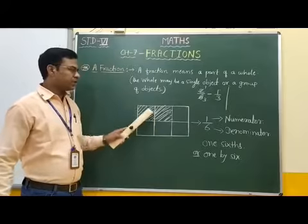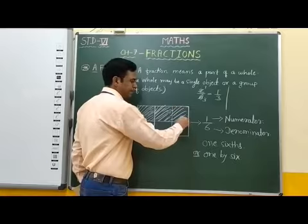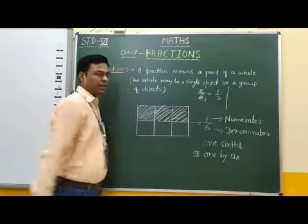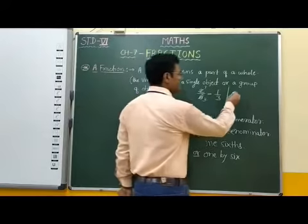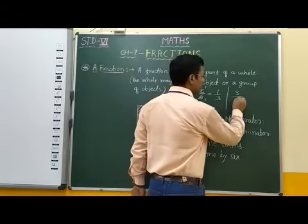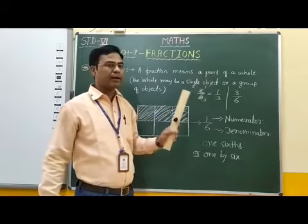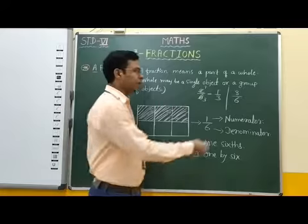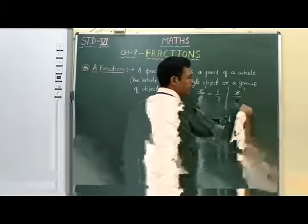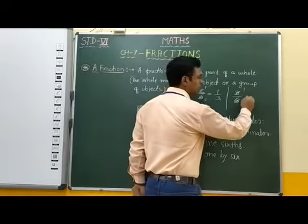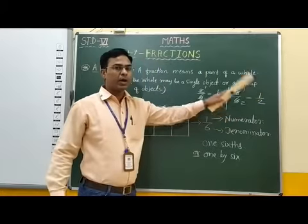In this figure, if you shade 3 parts, then the numerator is 3 and the denominator is 6, giving a fraction of 3 by 6. Dividing both 3 and 6 by 3, we get 3 ones are 3 and 3 twos are 6, therefore the fraction simplifies to 1 by 2.